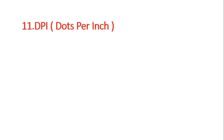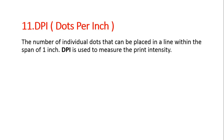Next is DPI — Dots Per Inch. This refers to the number of individual dots that can be placed in a line within the span of one inch. Generally used with printers, the higher the DPI, the better and higher resolution the print output will be.